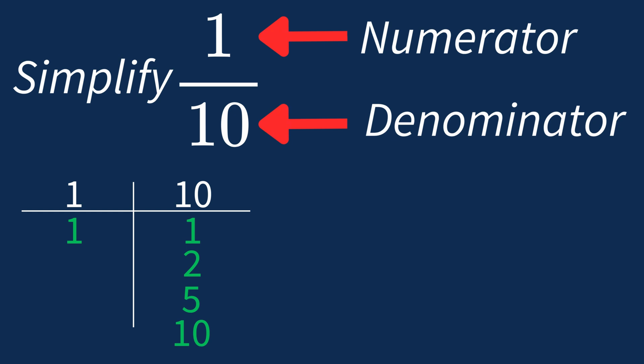So in this case, the largest common factor is 1. This means we'll divide both the numerator and denominator by 1 to see if anything changes. Dividing the numerator 1 by 1 gives us 1. Dividing the denominator 10 by 1 leaves us with 10.